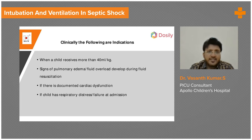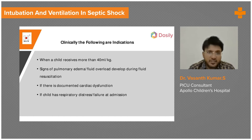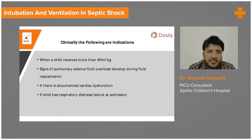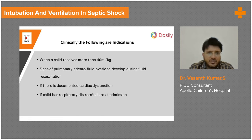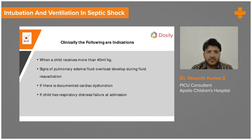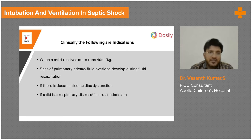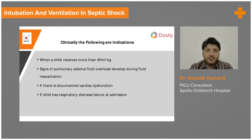In pediatrics, usually when the patient receives more than 40 ml per kg and when there is LV dysfunction with frothing or pulmonary edema, you obviously go ahead with intubation and ventilation. And if there is obvious cardiac dysfunction with severe respiratory distress or respiratory failure, you will go ahead with intubation, because most of the blood is diverted to the respiratory muscles and you want it shunted to the vital organs — heart, brain, and kidneys.